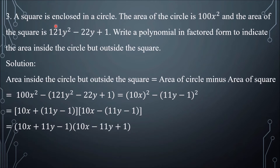Number 3: a square is enclosed in a circle. The area of the circle is 100x squared, and the area of the square is 121y squared minus 22y plus 1. Write a polynomial in factored form to indicate the area inside the circle but outside the square. The area inside the circle but outside the square equals the area of the circle minus the area of the square.